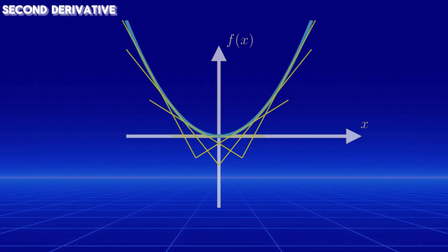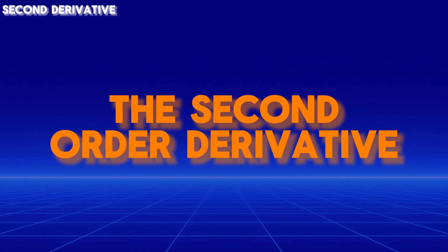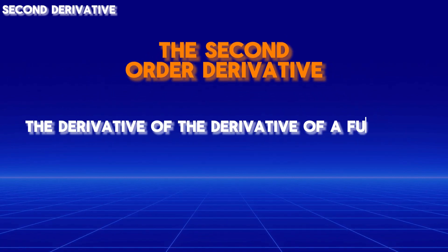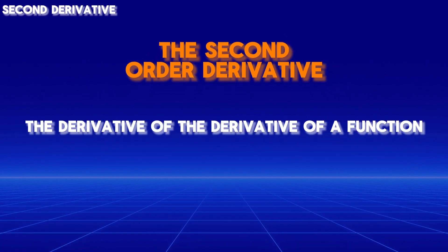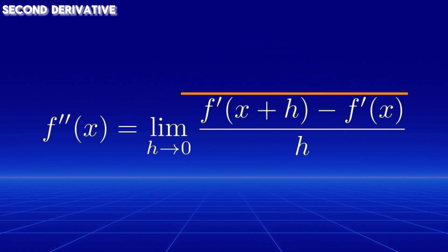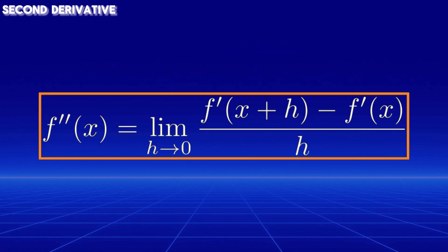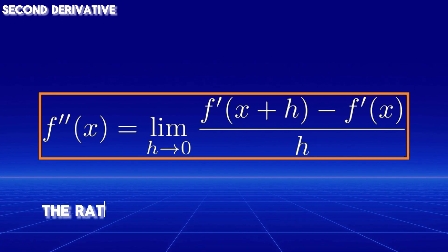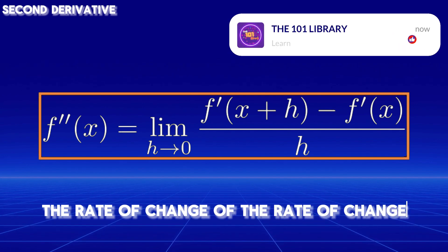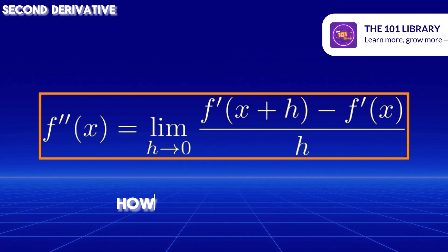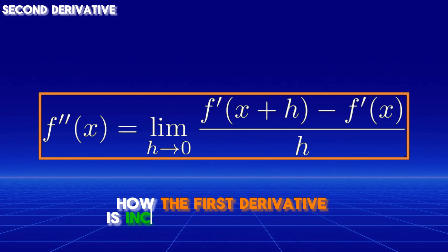The second derivative, also called the second-order derivative, is the derivative of the derivative of a function. It can be formally defined using the limit definition as shown here. In simple terms, the second derivative is the rate of change of the rate of change — it essentially measures how the first derivative is increasing or decreasing.